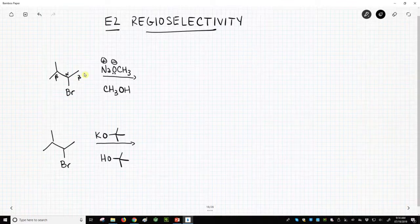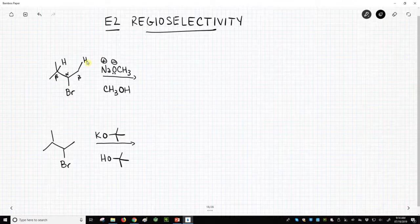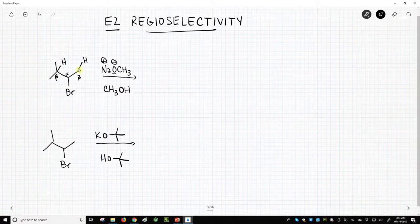Which beta carbon will react? Well, as we know, we're not going to react the beta carbon. We're going to react a hydrogen on the beta carbon. So we have two different beta hydrogens, and of course, this carbon has more than one beta hydrogen, but these three are the same, and this one is a second group.